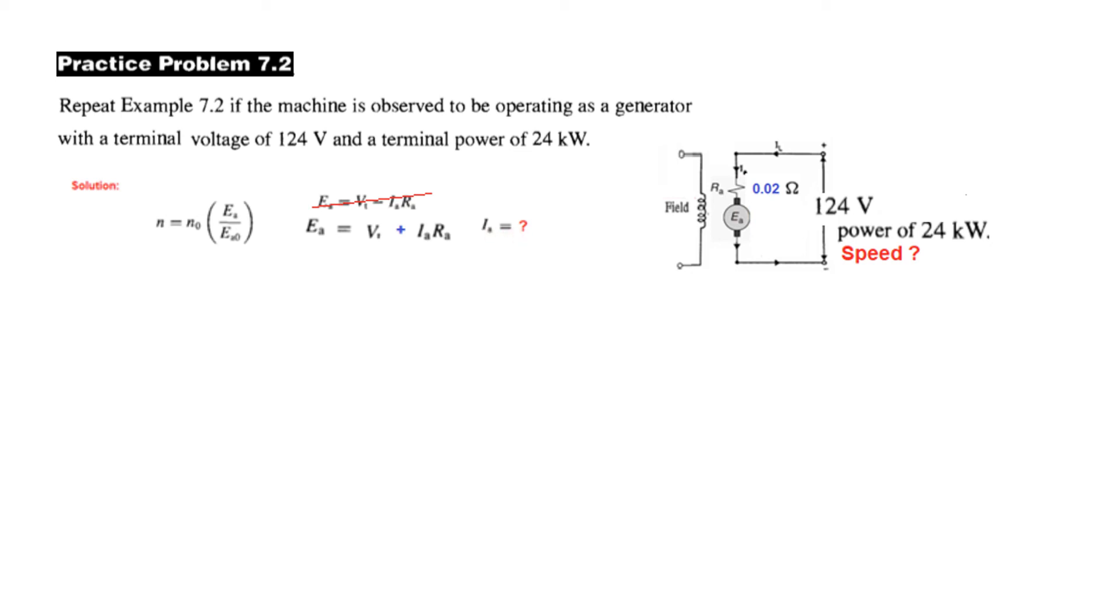So first of all, to find this, we know Vt is 124. Ia we don't know, so we have to find Ia. And as before, we will find Ia or the armature current from the power. So Ia can be written as input power divided by the terminal voltage. Input power 24 kilowatt divided by terminal voltage 124 volt. So this is the current Ia or armature current.